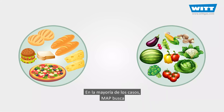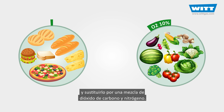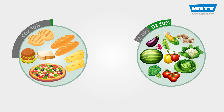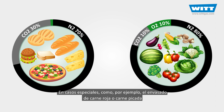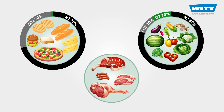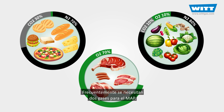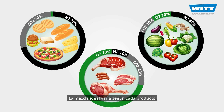In most cases, MAP is aimed at eliminating or reducing oxygen inside the packaging and replacing it with a mixture of carbon dioxide and nitrogen. Of course, in special cases such as packing red meat and fresh produce, the opposite is correct — we do not eliminate the oxygen but instead increase its concentration to prevent anaerobic growth. MAP therefore normally requires a mixture of at least two gases, and the optimum proportions vary from product to product.